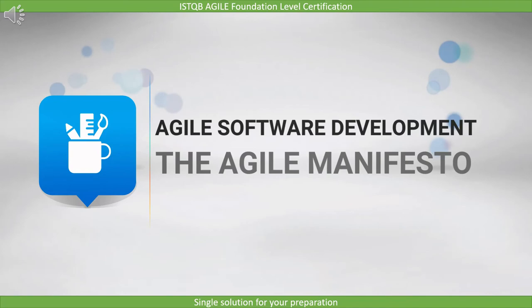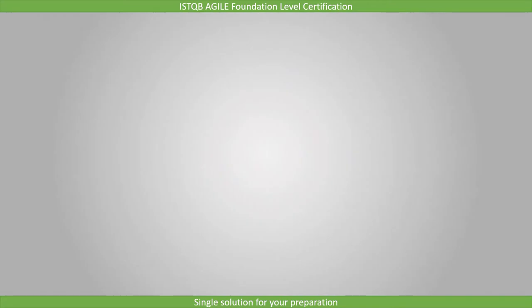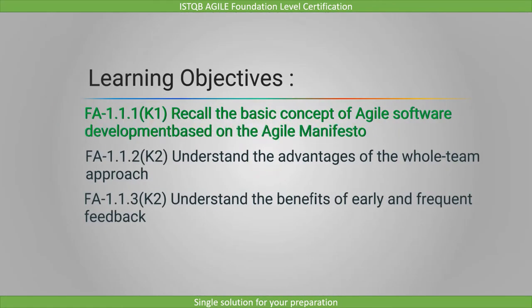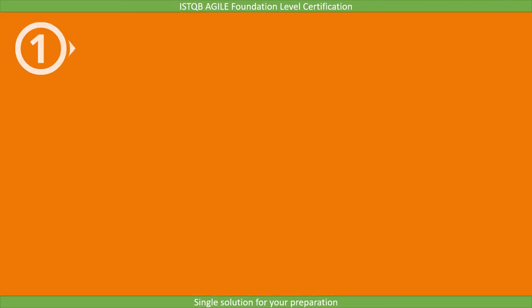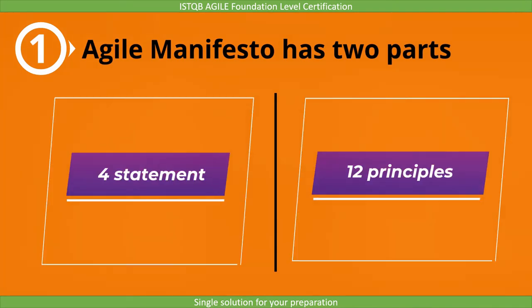In this lecture we will cover agile software development and the agile manifesto. The learning objective is to recall the basic concept of agile software development based on the agile manifesto. This is marked as K1, so you will get a direct question from this topic and you have to remember the points. The agile manifesto has two parts: the first part contains four statements of values, and the second part contains 12 principles. In this lecture we will cover the four statements, and in the next lecture we will cover the 12 principles.